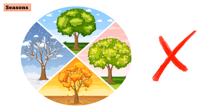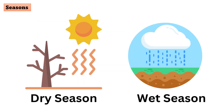Seasons: The tropics do not have four seasons. Instead, they often have two main seasons — a dry season and a wet season. The dry season is marked by less rainfall and lower humidity levels, while the wet season is characterized by heavy rainfall and high humidity.